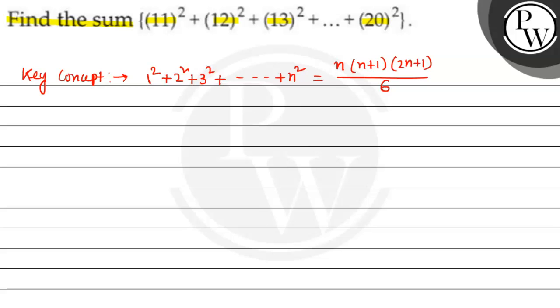Now, here on the table given is 11 square plus 12 square plus 13 square plus dot dot up to 20 square.